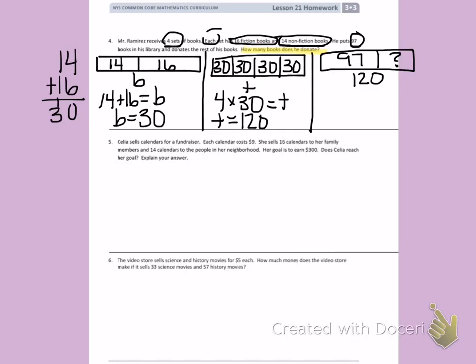When I am missing a part, I subtract. And I should put a letter in that circle instead of a question mark. So let's use the letter D for donate. So I am going to subtract 120 minus 97 will give me D.